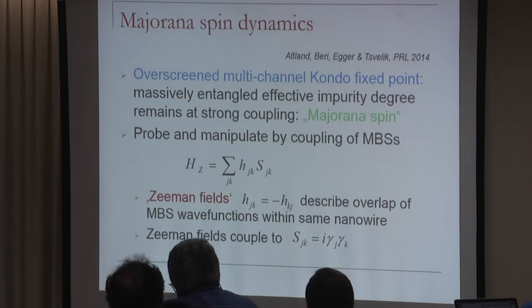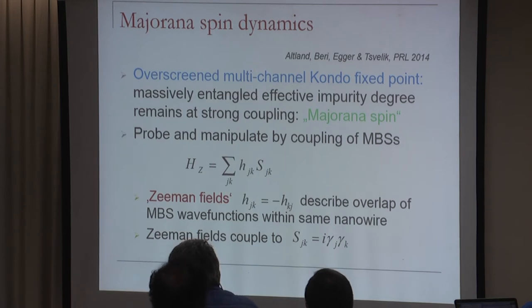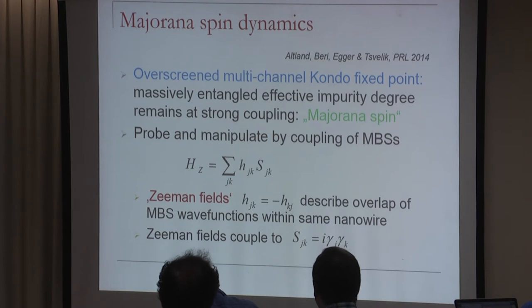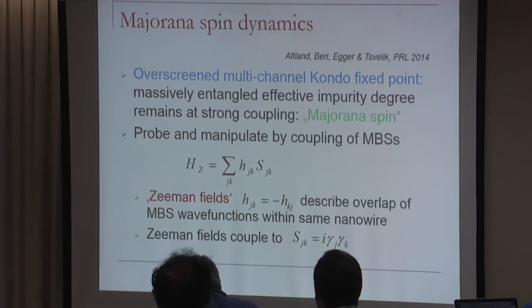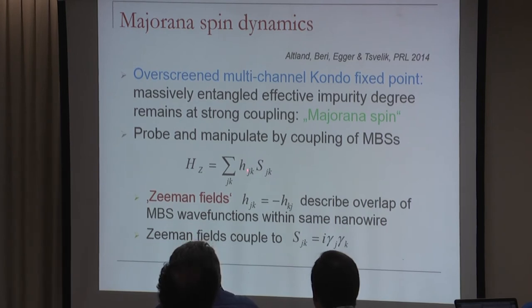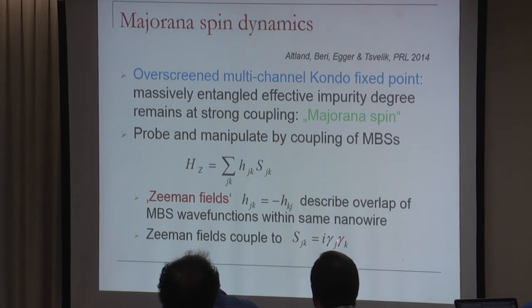Near the strong coupling Kondo fixed point we have an over-screened multi-channel Kondo-type fixed point where a massively entangled effective impurity degree of freedom remains—a residual ground state entropy. One natural way to probe this is via Zeeman fields. For a normal spin one uses a Zeeman field; analogously one can write something coupling to the S_JK operators (products of gamma_J and gamma_K). Physically, these are tunnel couplings between Majoranas—for instance within the same nanowire if it's not too long—acting like Zeeman fields contained in antisymmetric matrices H_{JK}.